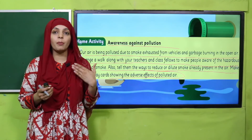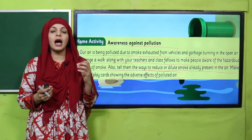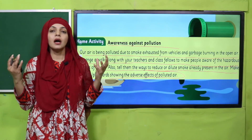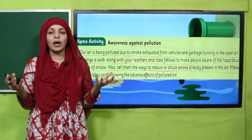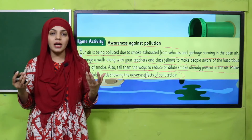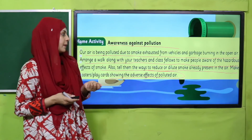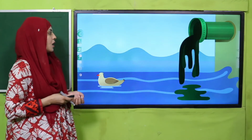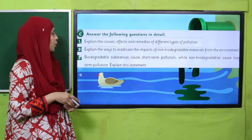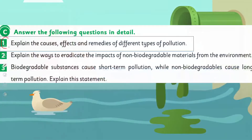Aapne apni earth ko jo hai bachana hai, isko clean aur green banana hai. Then you will do question number one — aapne already iski two types kar li hain: air pollution aur water pollution. Today you will do land pollution. Do it in your notebooks.